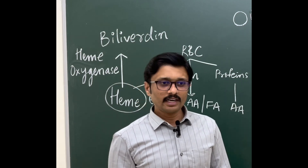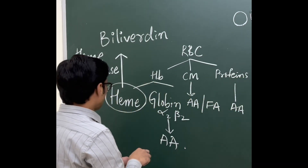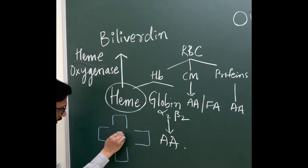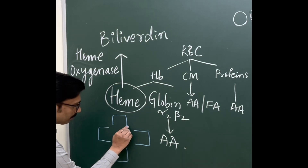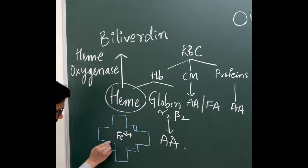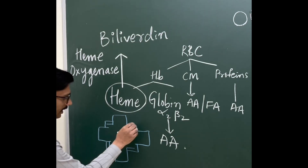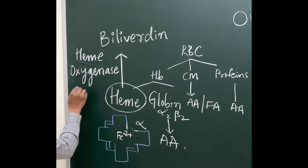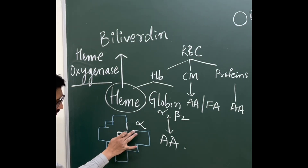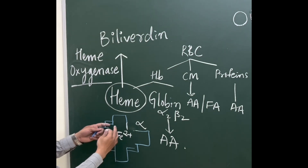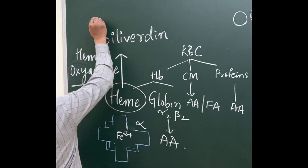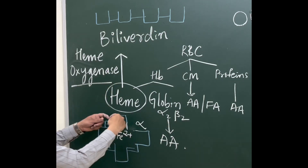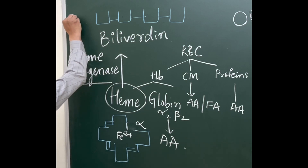Heme has four pyrrole rings with Fe²⁺ in the center, connected by methane bridges. The alpha methane bridge is cleaved by heme oxygenase. The ring is split open — in biliverdin, the four porphyrins are elongated into an open chain. The iron, Fe²⁺, is released in this process.